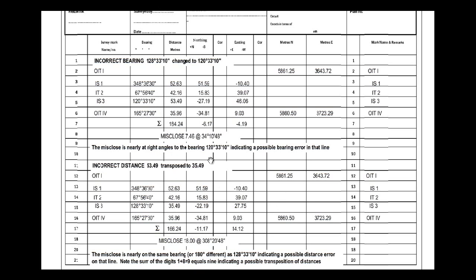So there are two quick tips for finding gross errors in bearings and distances: look for lines that are at right angles to the bearing of the misclose as an indication of a bearing error, and look for lines that are on the same bearing or 180° different to the misclose as an indication of a distance or transposition error in your traverse.